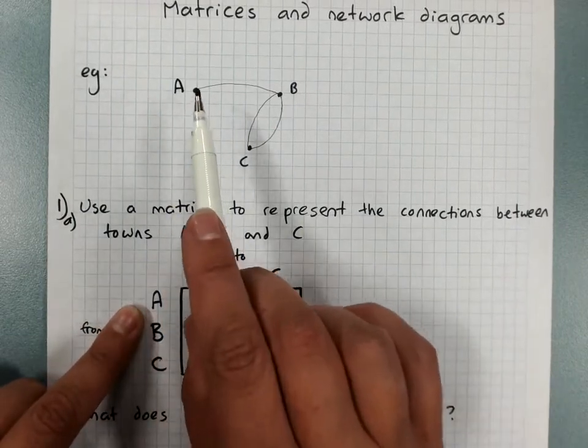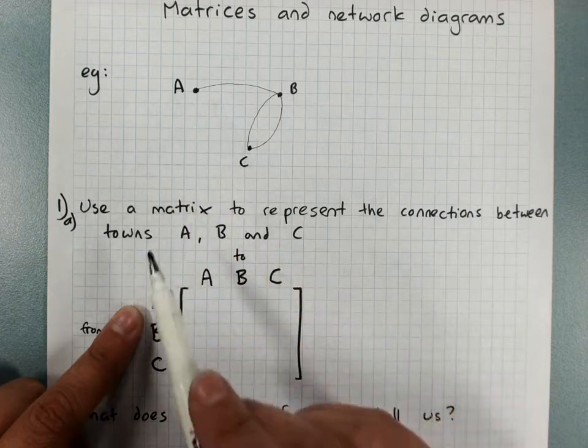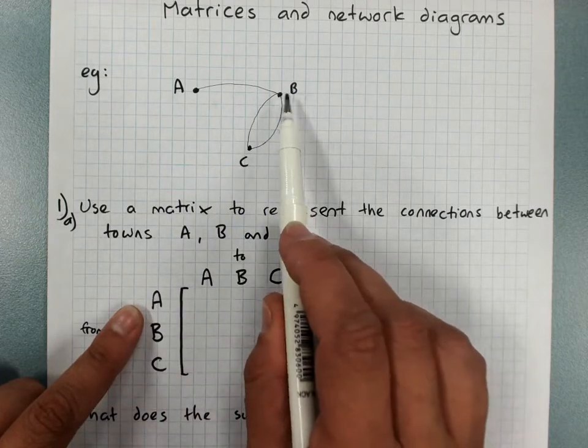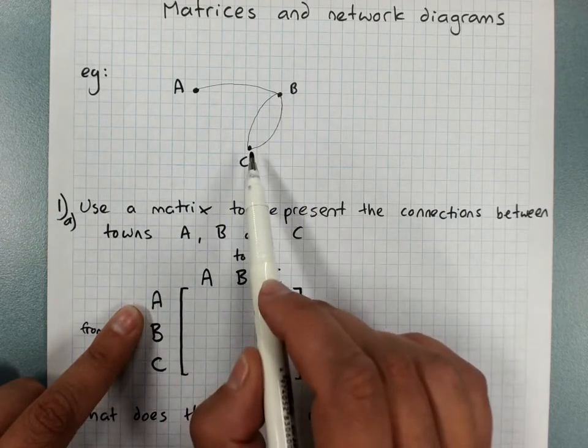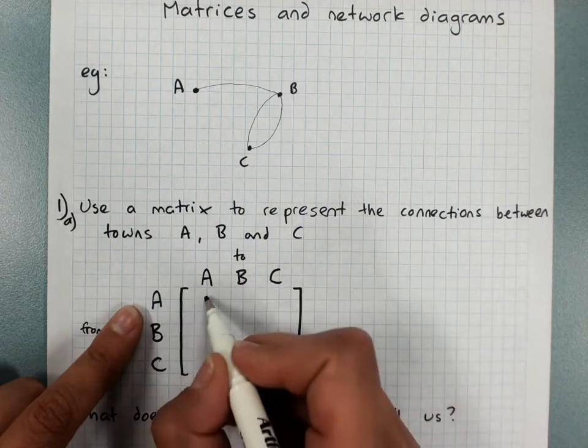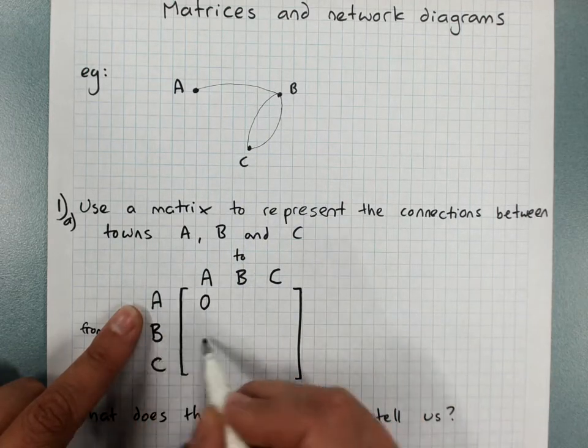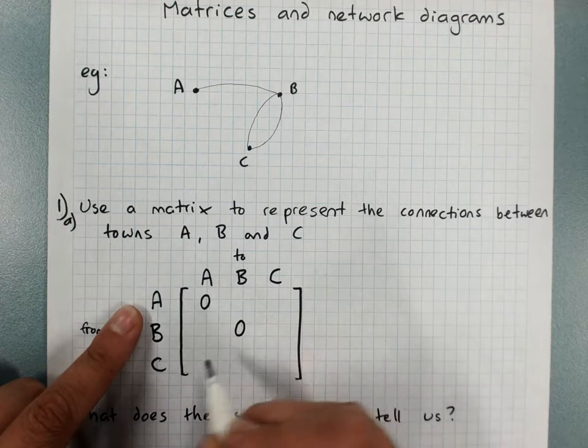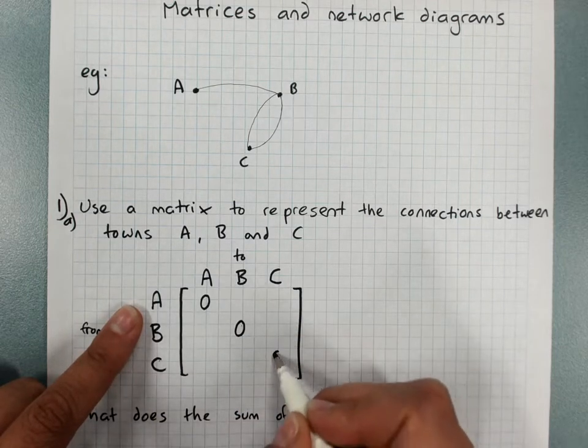Now there's no roads from A to A. That would be a loop going back on itself. No roads from B going back to B. No roads going directly from C back to C. So from A to A there's nothing, from B to B there's nothing, from C to C there's nothing.